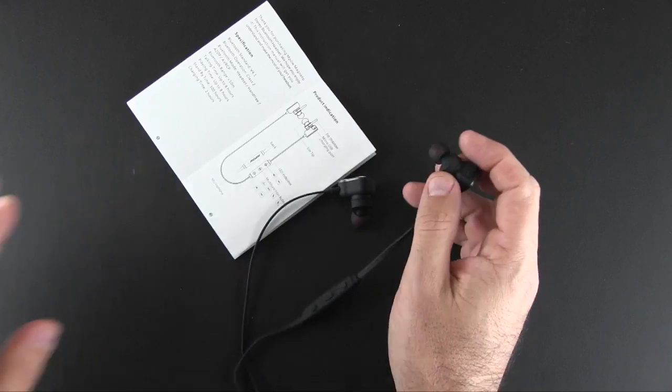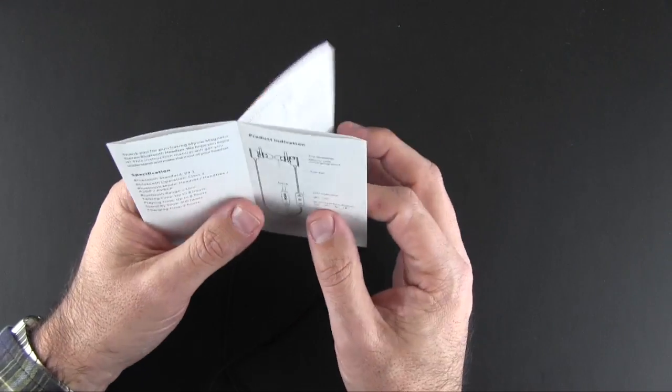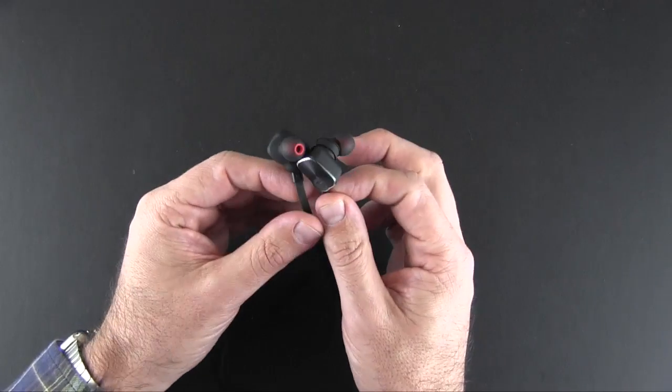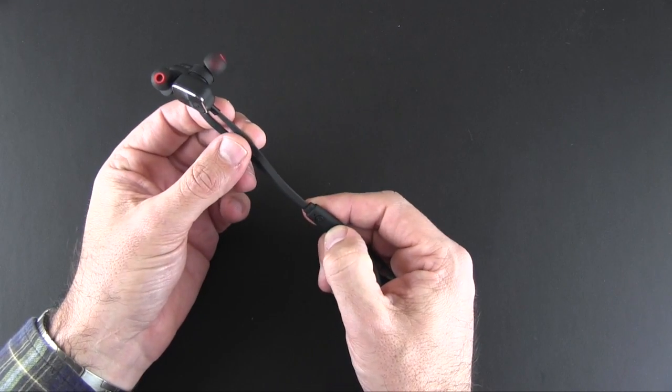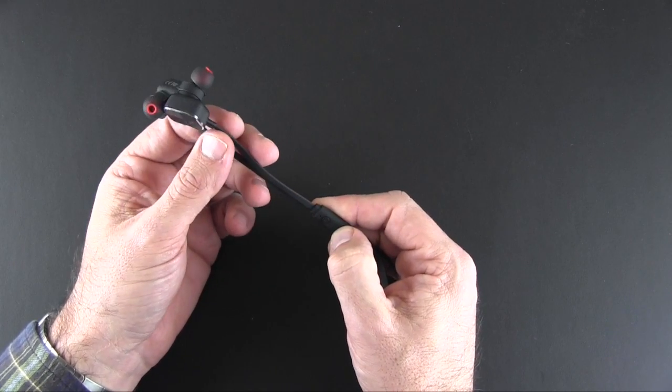Once they're paired up, you can use these wirelessly with a range of about 10 meters. So you're going to want to have your phone somewhat close by. When it comes time to turn them off, press and hold the power button again to turn these off.